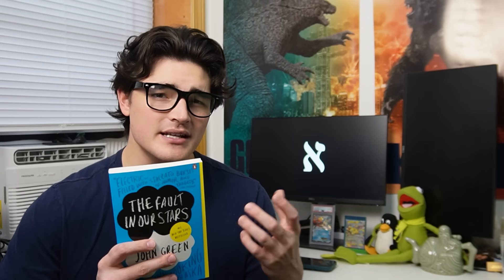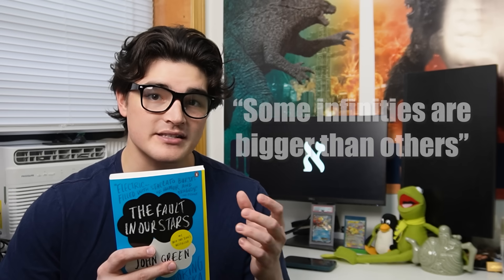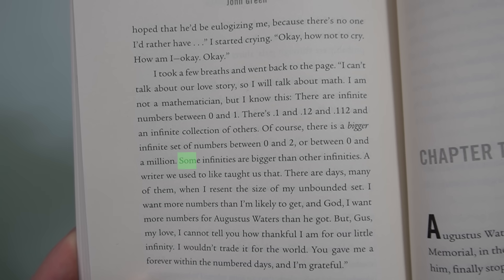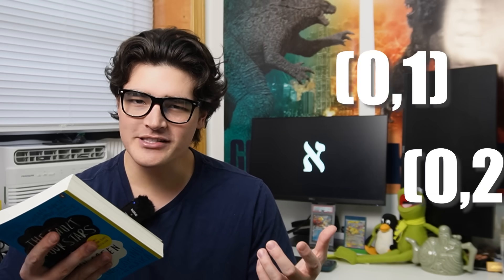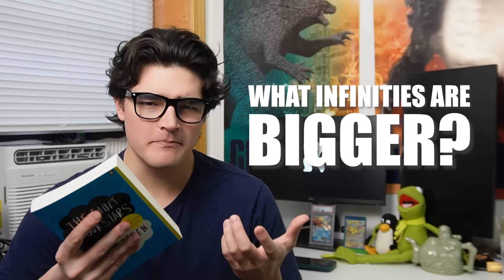This is a line from John Green's book titled The Fault in Our Stars, and it presents an incorrect understanding of the phrase some infinities are bigger than others. While the statement in itself is true, its application is not. There are just as many numbers between 0 and 1 as there are between 0 and 2. So if that's not what it means, what infinities are bigger?